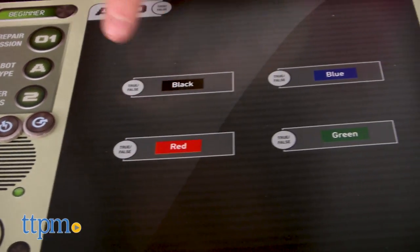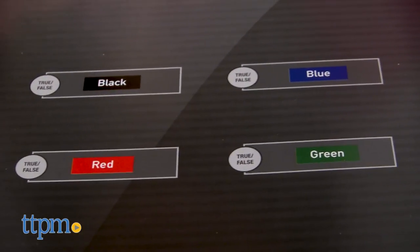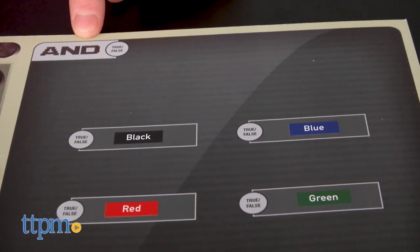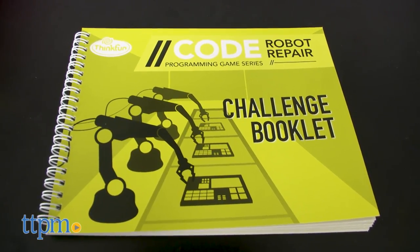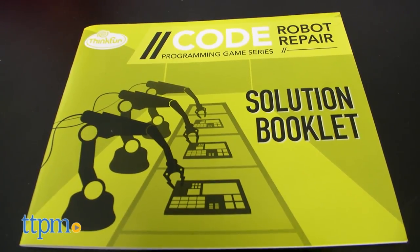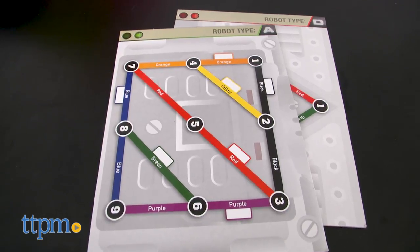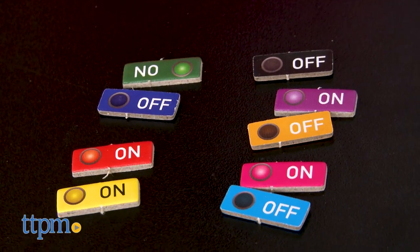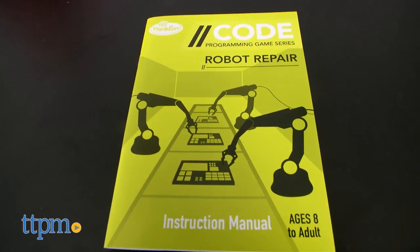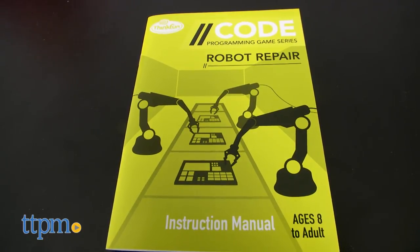The board game uses problem solving to reactivate a set of robots whose power cells have been removed. The game comes with a booklet of 40 challenges that includes clue panels, a solutions booklet, four robot circuit boards, power buttons, true-false tokens, as well as on and off tokens, and the crucial and ever-important instruction manual.